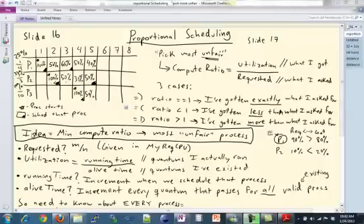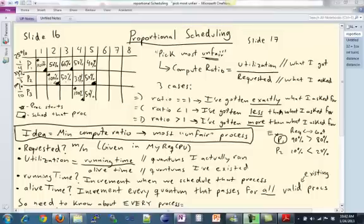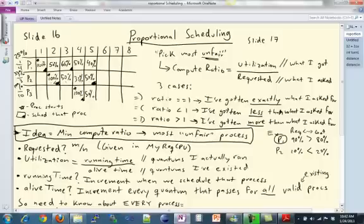Okay, so in the last video, we went through an example of what proportional scheduling looked like, and our key idea is that the min compute ratio is going to be our most unfair process, and right now we're only dealing with processes that actually requested CPU. We're going to do the ones that didn't request in a later video.